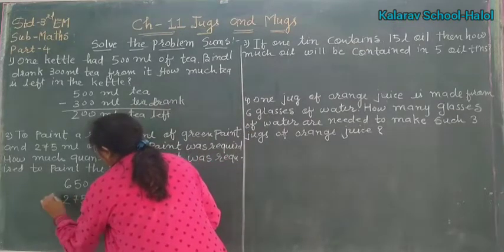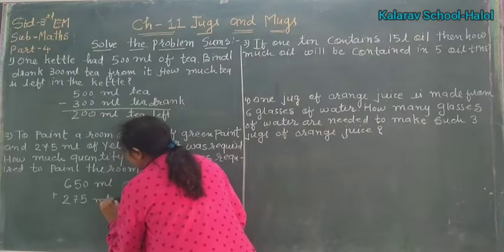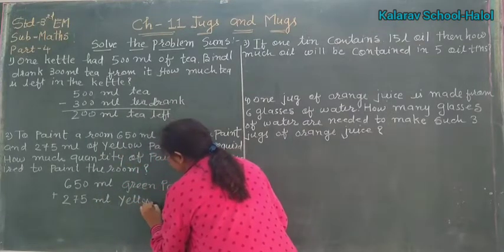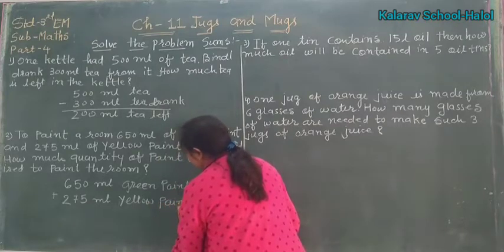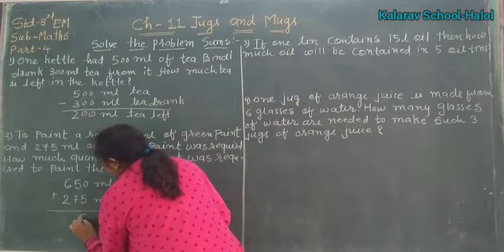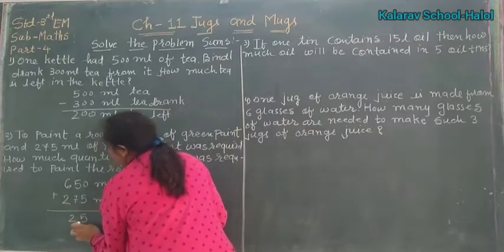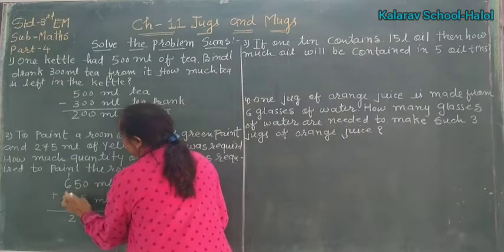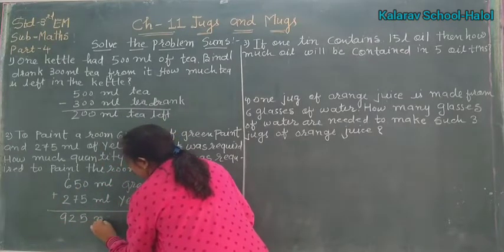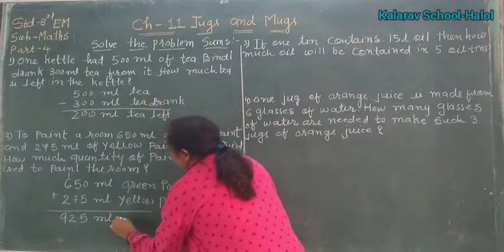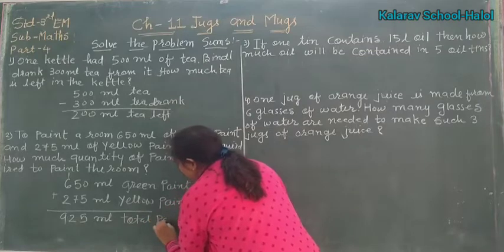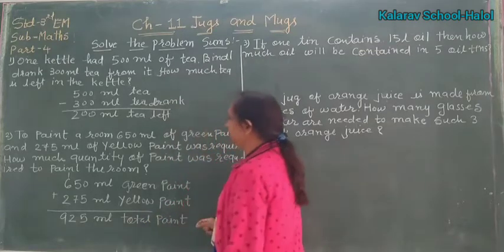Then, 275 ml joh hai, woh yellow paint hai. So, yaha pere total kya? 0 plus 5 is 5, 7 plus 5 is 12 — write 2, carry 1, 6 plus 2 is 8, plus 1 carry is 9. So 925 ml joh hai, woh total paint we need.